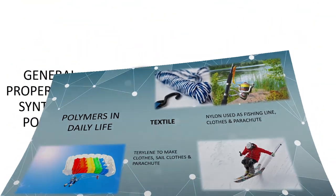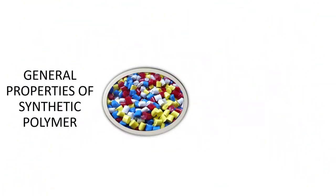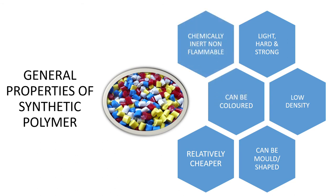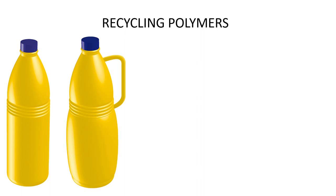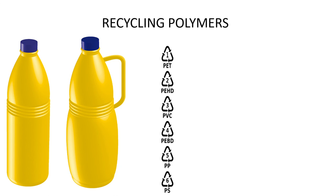Synthetic polymers are widely used because of their various properties, such as being light, hard, and low density, as well as being relatively cheaper and easy to color and shape. They are also chemically inert and non-flammable. Most synthetic polymers can be recycled — you may notice a small recycle symbol on packaging materials such as bottles, indicating the type of polymer. Examples include polypropylene (PP) and high density polyethene (HDPE).